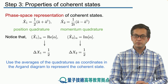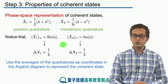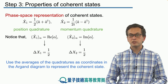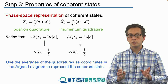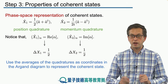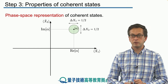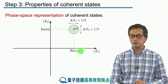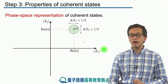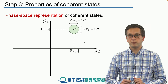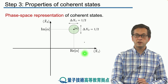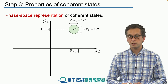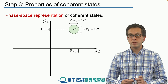This property — that the averages of x1 and x2 are the real and imaginary parts of alpha — allows us to think of coherent states as just points in an Argand diagram. We have our plane where on the horizontal axis we plot the average of x1, which is the real part of alpha, and on the vertical axis the average of x2, the momentum quadrature, corresponding to the imaginary part of alpha.